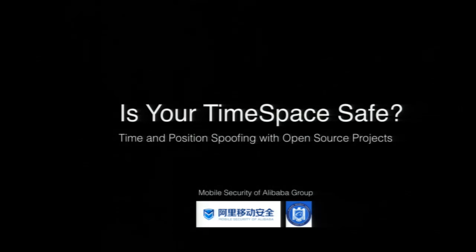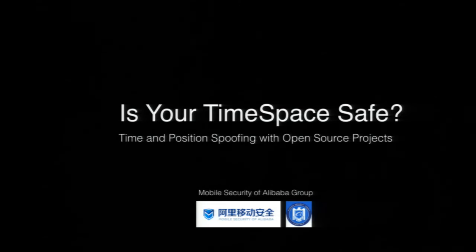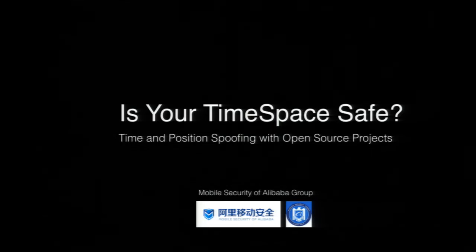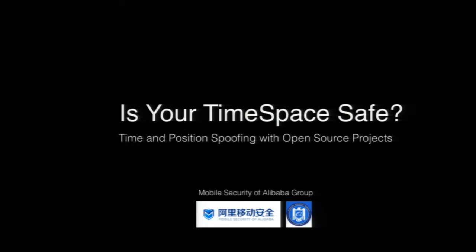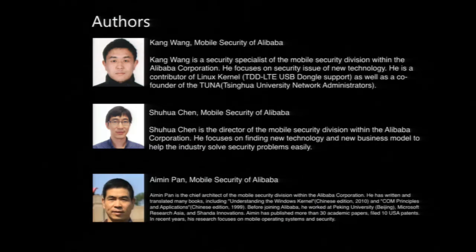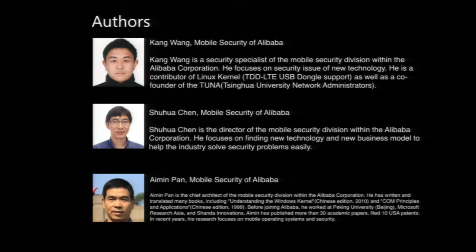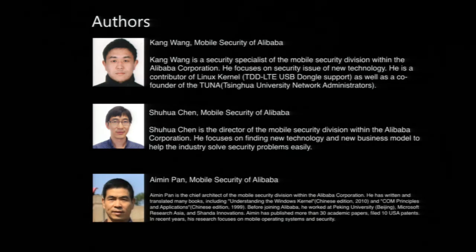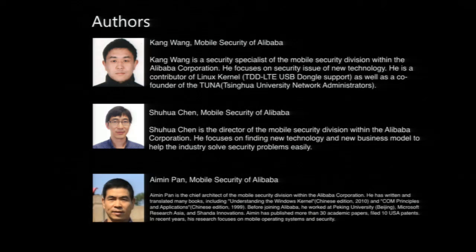Good afternoon, folks. Thanks for dropping by. My talk is about time and position spoofing with open source projects. GPS is widely used for positioning and time synchronization for mobile devices. However, since time and position data of mobile devices are trusted and seldom verified by most vendors and developers, it provides a huge attack surface for potential attackers. My name is Wang Kang. I'm a security analyst for a mobile security team of Alibaba Group in China. Chen Shihua and Pan Naimin are co-authors of this talk, but they are attending the double 11 festival in China, so they cannot come here today.